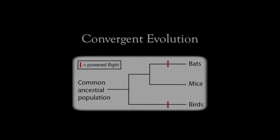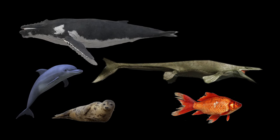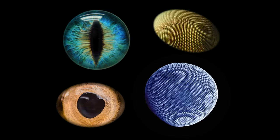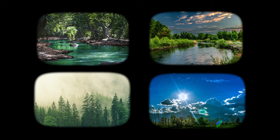Another example worth mentioning is convergent evolution, where species which are not closely related evolve similar traits due to inhabiting similar environments. The evolution of a streamlined body in fish, marine mammals, and ancient marine reptiles. The adaptation of echolocation in porpoises and bats. The evolution of eyes, which have appeared hundreds of times independently. Wings have evolved in birds, mammals, and even fish. There are countless examples of similar body shapes and traits which have evolved independently due to organisms inhabiting similar environments.